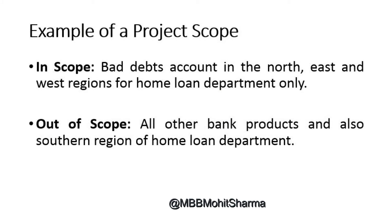Here is an example of project scope. In scope: bad debt accounts in the north, east, and west regions of the home loan department only. Out of scope: all other bank products and also the southern region of the home loan department. Clearly articulate what is in scope and what is out of scope.